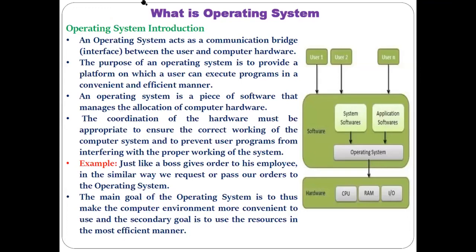From this figure you can easily understand what the operating system is. Most importantly, the operating system is one of the system programs — I have been saying this since the first lecture of system programming. A system program is a program that helps the system to work. By 'system' we mean the computer system, which is formed with the help of different hardware components like the processor or CPU, motherboard, main memory, secondary memory, and input-output devices.